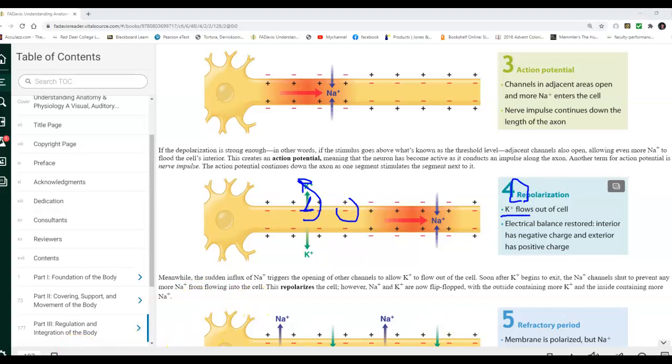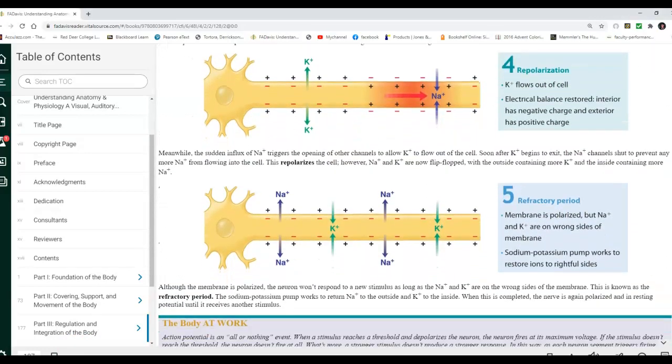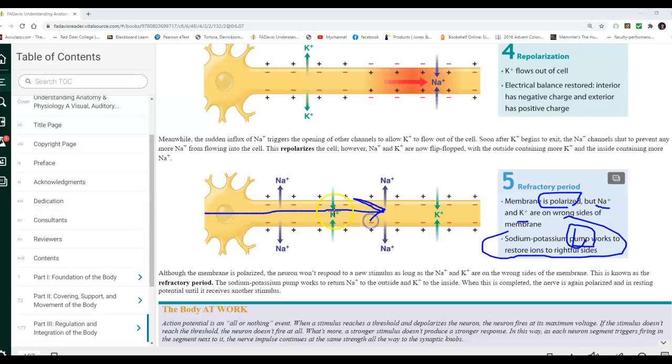Then there is a bit called a refractory period. In the refractory period, basically nothing's working because everything's resetting. The potassium and sodium are on the wrong side. The membrane is polarized but they're in the wrong spot, so the pumps need to set up again. The pumps will then restore. In the refractory period it doesn't work because you need to restore everything. Because of the fact that it can't go backwards because it's in the refractory period, the action potential only goes in one direction. And that's very important. That is how the action potential works.